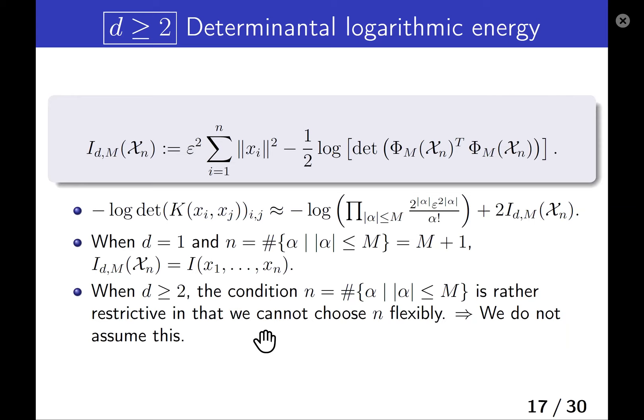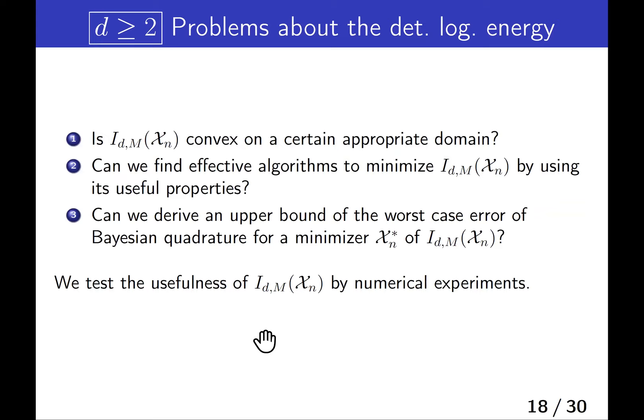Unfortunately, we do not know the precise properties of this energy. We have some open problems about the determinant logarithmic energy. Number one: is the energy convex on the certain approximate domain? Number two: can we find an effective algorithm to minimize this by using its useful properties? Number three: can we derive an upper bound of the worst-case error of Bayesian quadrature for a minimizer of the energy? We would like to solve these problems in future work.